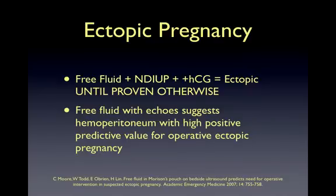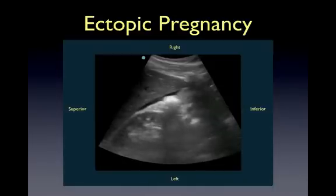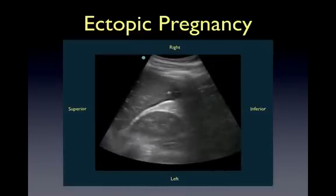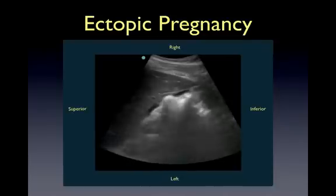This brings me to a very important point. A patient who is HCG-positive and has free fluid in the pelvis or in Morrison's pouch has an ectopic pregnancy until proven otherwise. Free fluid with echo suggests hemoperitoneum with high positive predictive value for operative ectopic pregnancy. Here's an example of fluid in Morrison's pouch. If you see this in an HCG-positive female, be concerned for a ruptured ectopic.